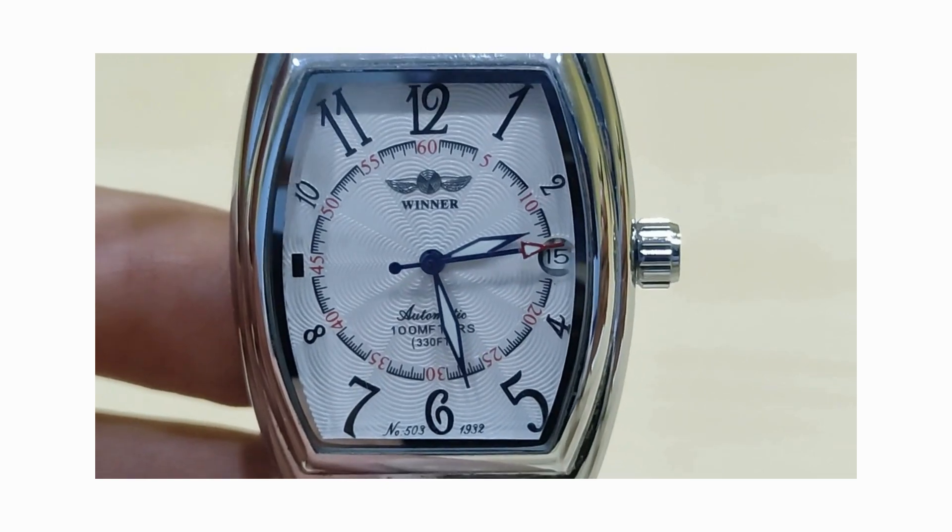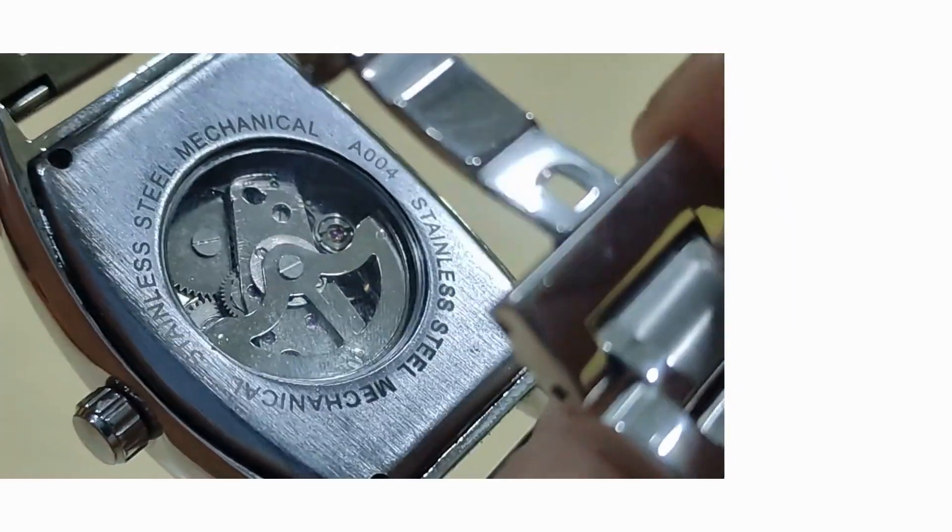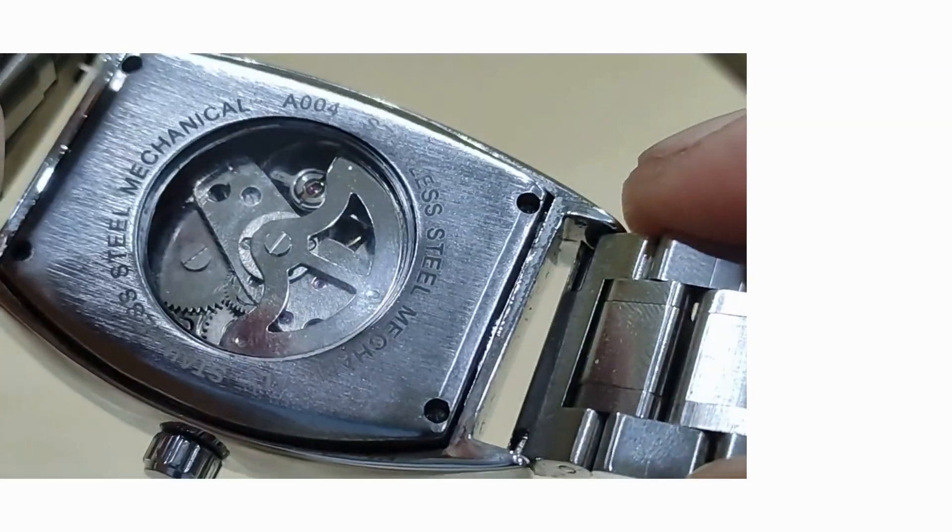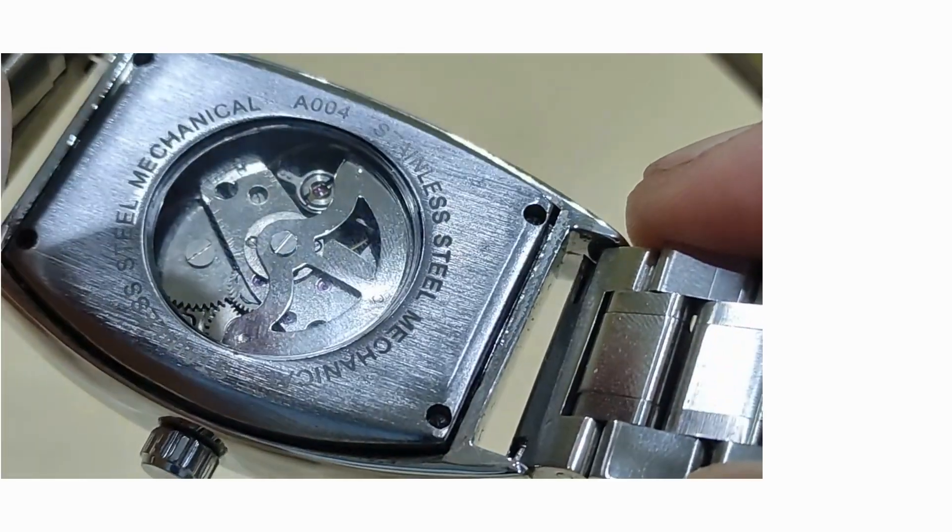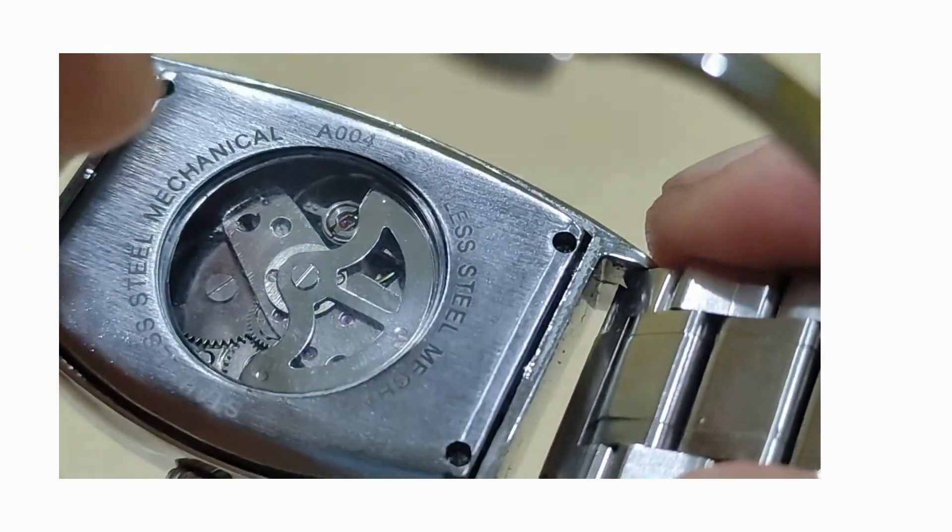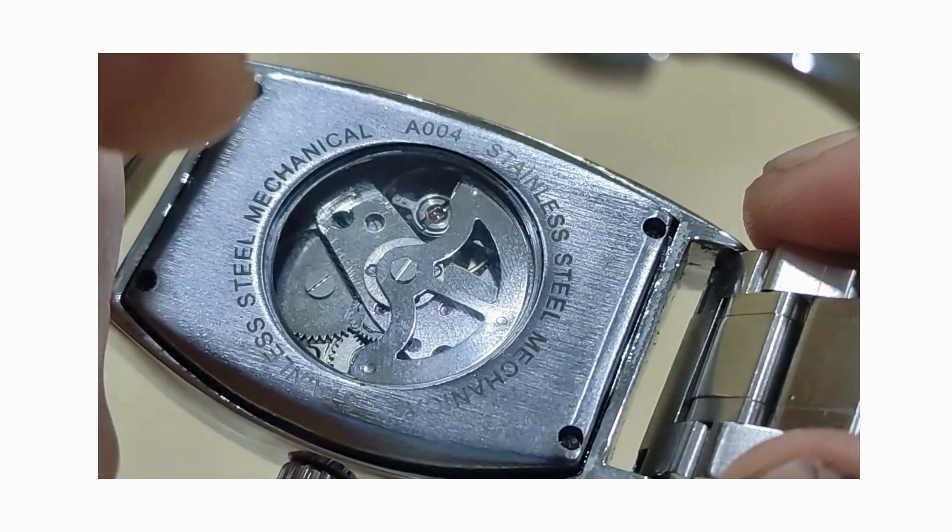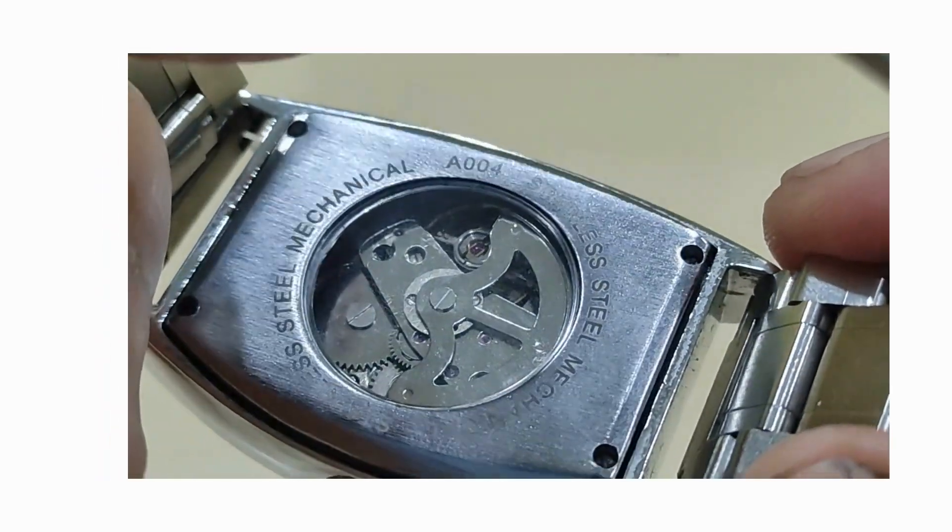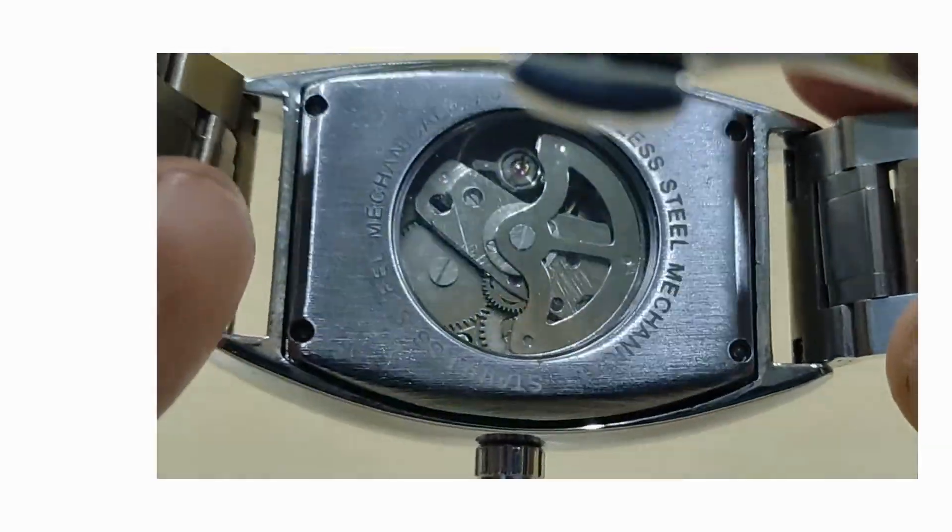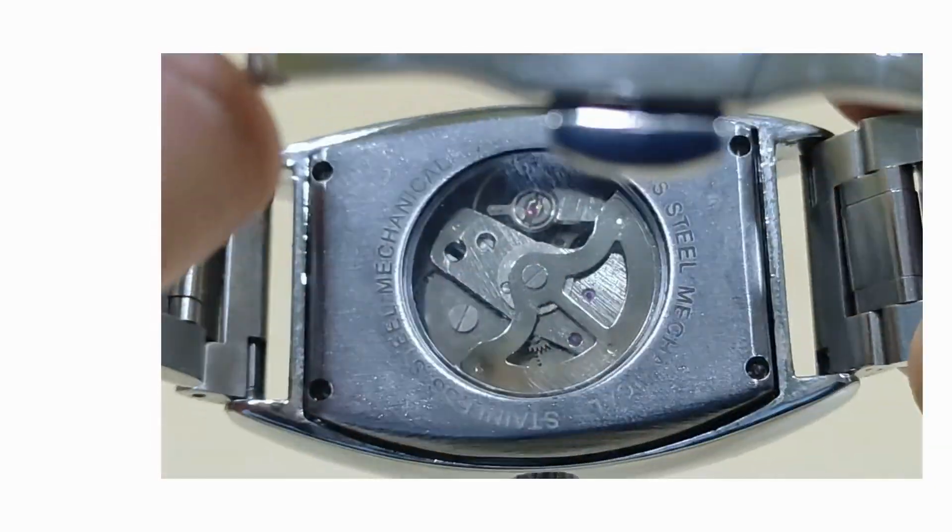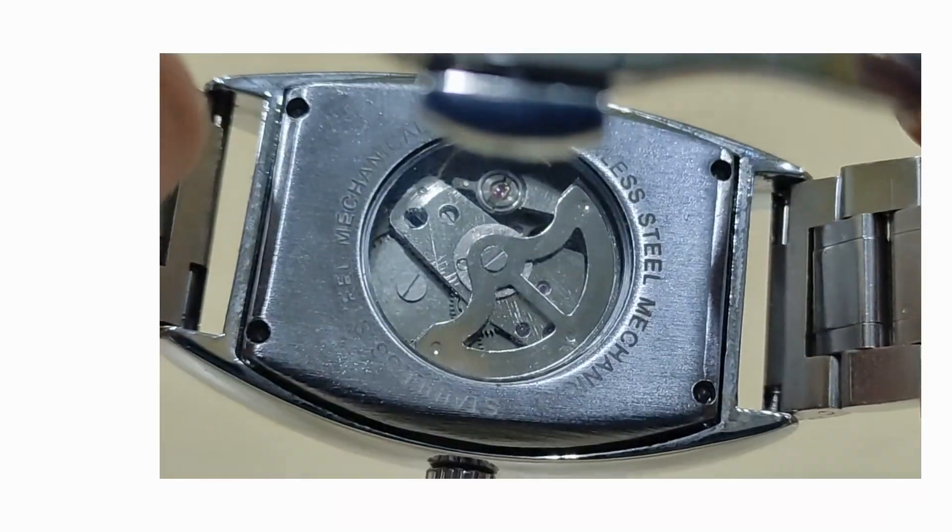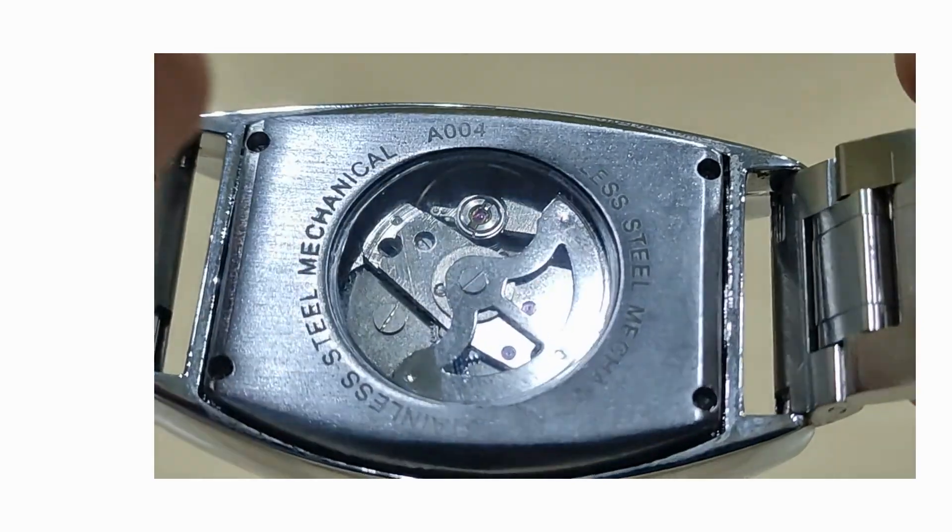Let's have a look at the back of this thing. So there we have the back. It is a stainless steel back cover, as you can see from the details around the outside: stainless steel mechanical, although it's an automatic, and A004. I think this watch has two designations, the 503 and the A004, although the A004 may refer to just the movement. It's quite a basic movement, as you'd expect from $14, with a bi-directional rotor, plain and unpatterned.